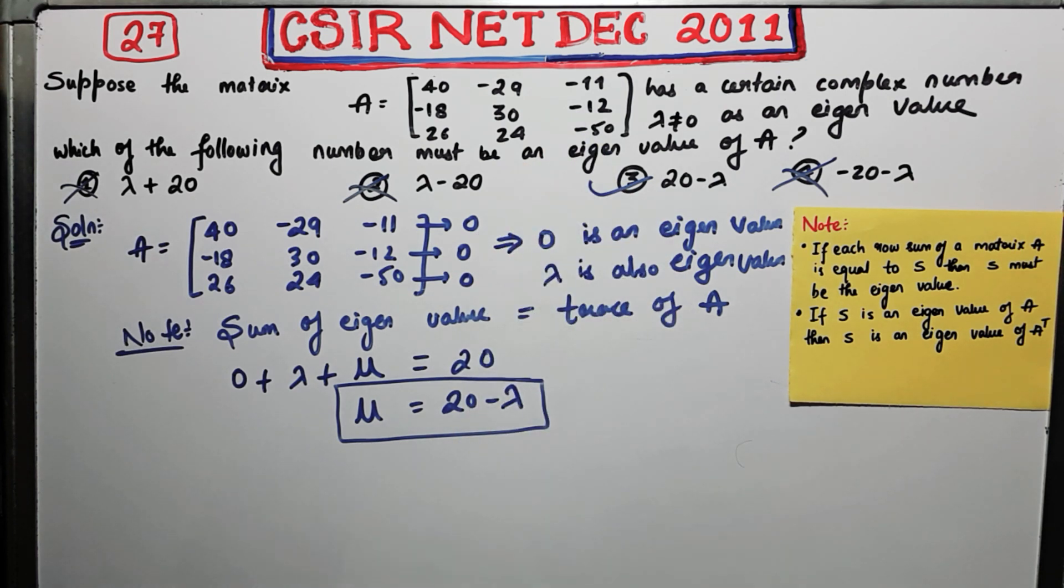Suppose each column sum is equal and is equal to S, then that S number is again an eigenvalue by using this note. So thank you guys.